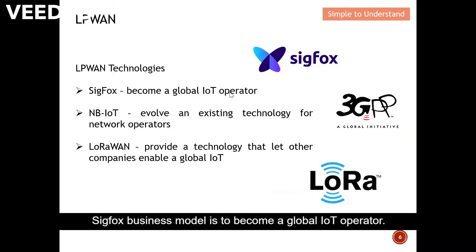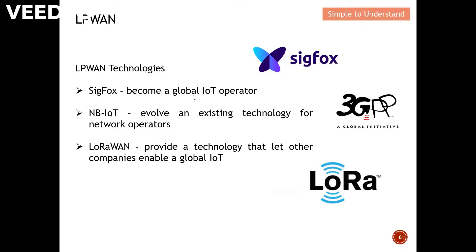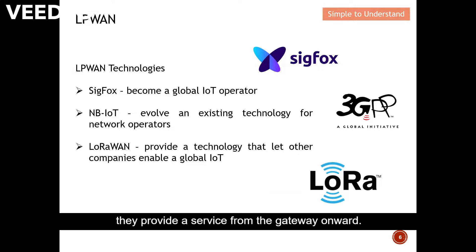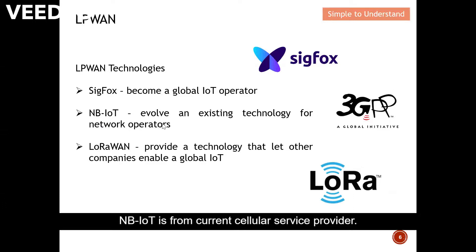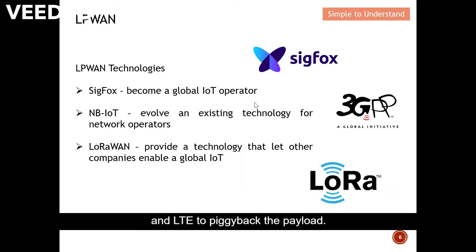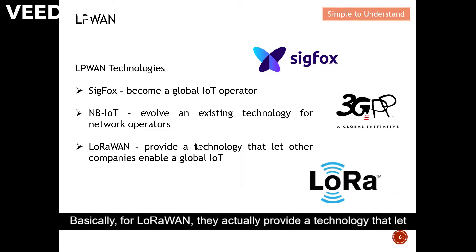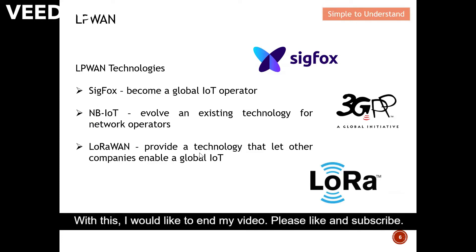Sigfox's business model is to become a global IoT operator — they don't sell hardware or software; they provide a service from the gateway onward. NB-IoT is from current service providers who use existing technology like 2G and LTE to piggyback the payload. LoRaWAN's business model is to sell LoRa chips and provide a technology that lets other companies enable a global IoT network.